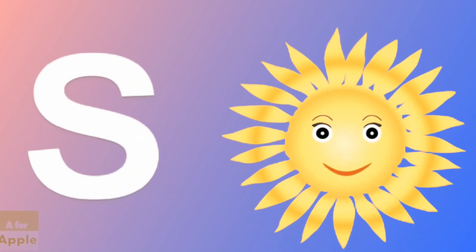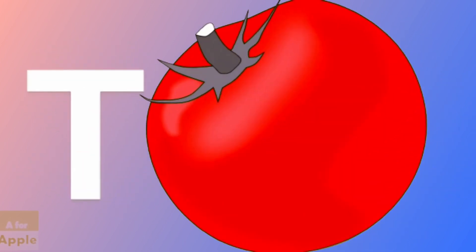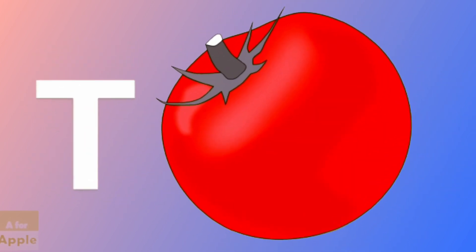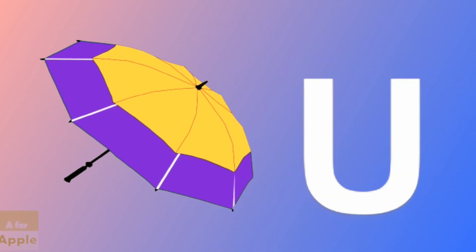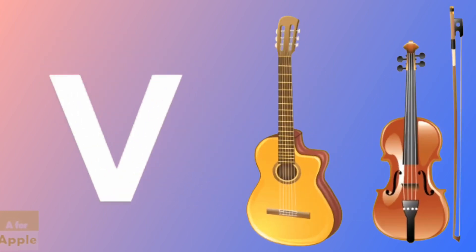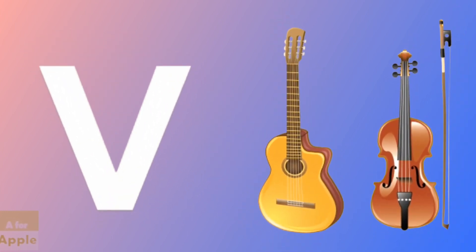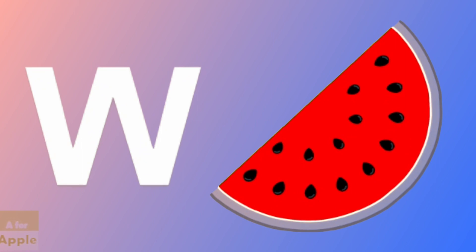S for sun, T for tomato, U for umbrella, V for violin, W for watermelon.